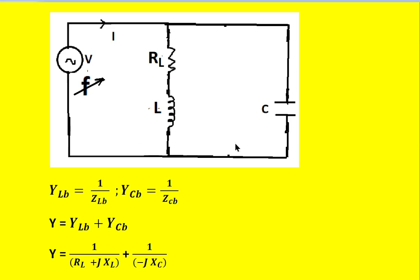For this tank circuit, to get the resonance frequency, it is necessary to use the admittance form of approach. So for the inductive branch, the admittance becomes Y_LB equal to 1 divided by Z_LB.